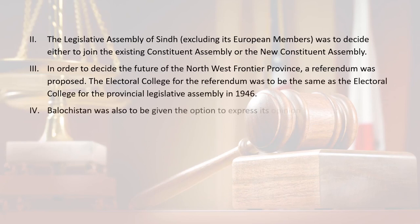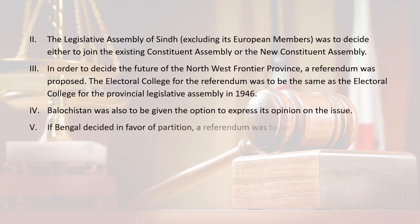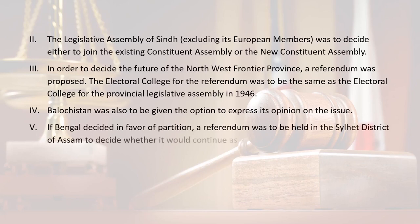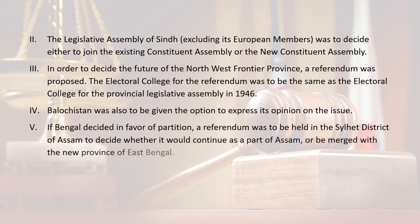Number four: Balochistan was also to be given the option to express its opinion on the issue. Number five: if Bengal decided in favor of partition, a referendum was to be held in the Sylhet district of Assam to decide whether it would continue as a part of Assam or be merged with the new province of East Bengal.